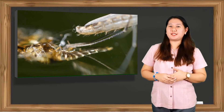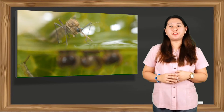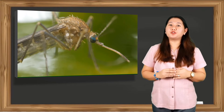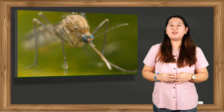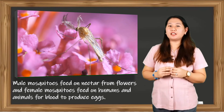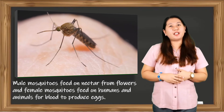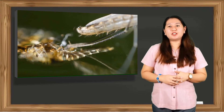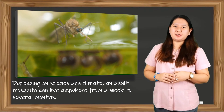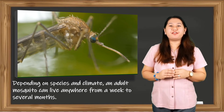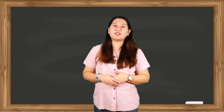After the pupal stage is complete, an adult mosquito will emerge. Typically the insect will rest on the water surface until its legs and wings are strong enough to support it. Within a few days of becoming adults, mosquitoes are able to fly and ready to bite. Male mosquitoes feed on nectar from flowers, while female mosquitoes feed on humans and animals for blood to produce eggs. Adult mosquitoes usually mate within the first few days after emerging from the pupal stage. Depending on the species and climate, an adult mosquito can live anywhere from a week to several months.